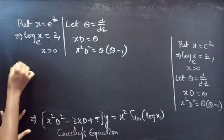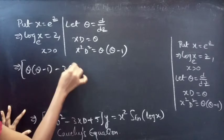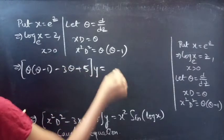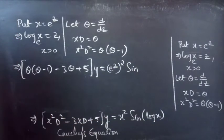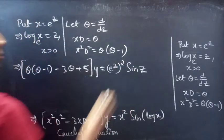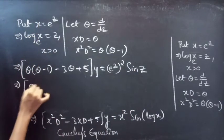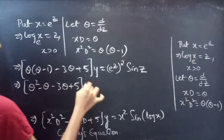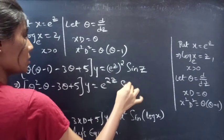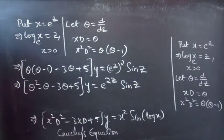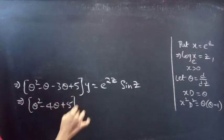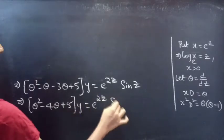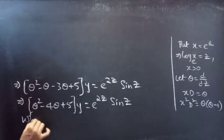Now this equation becomes θ(θ minus 1) minus 3θ plus 5 into y equals — replacing x by e^z and log x by z — e^(2z) sine z. Expanding: θ² minus θ minus 3θ plus 5 into y equals e^(2z) sine z. This simplifies to (θ² minus 4θ plus 5)y equals e^(2z) sine z, which is in operator form with constant coefficients.